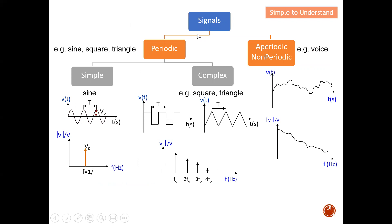To summarize what I described earlier: a signal breaks into periodic and non-periodic. Under periodic, there are simple and complex — a sine wave consists of just one frequency component (simple), while a square wave and triangular wave are made of more than one frequency component (complex). On the non-periodic side, as shown in the graph, there is no trend and you cannot predict how the signal looks — these are classified as non-periodic or aperiodic signals. With this, I'd like to end my discussion. Please like and subscribe — thank you so much.